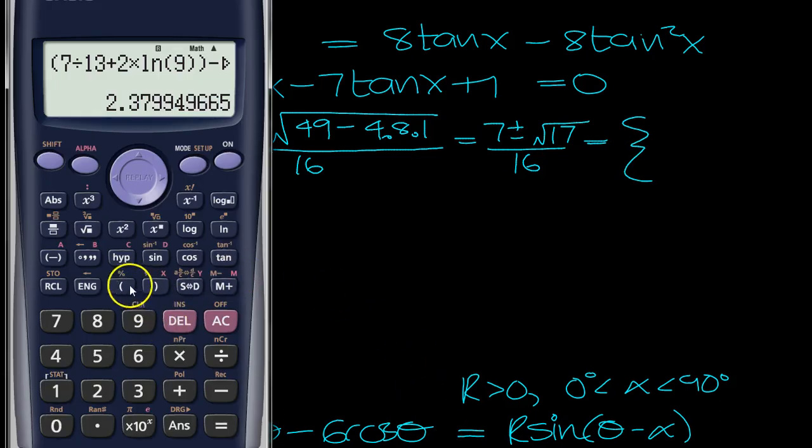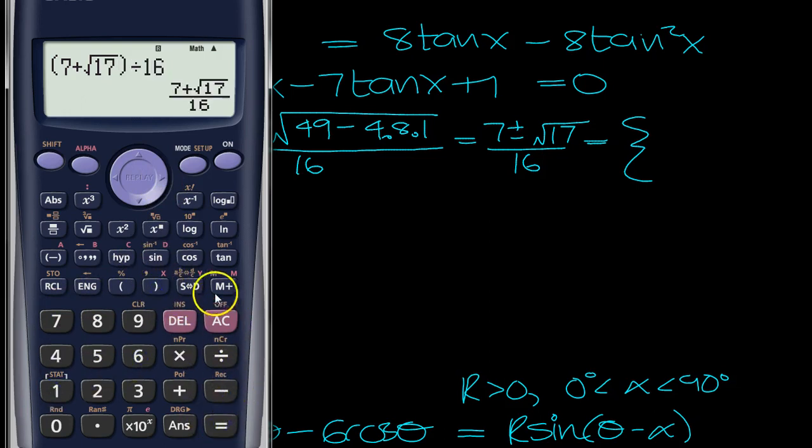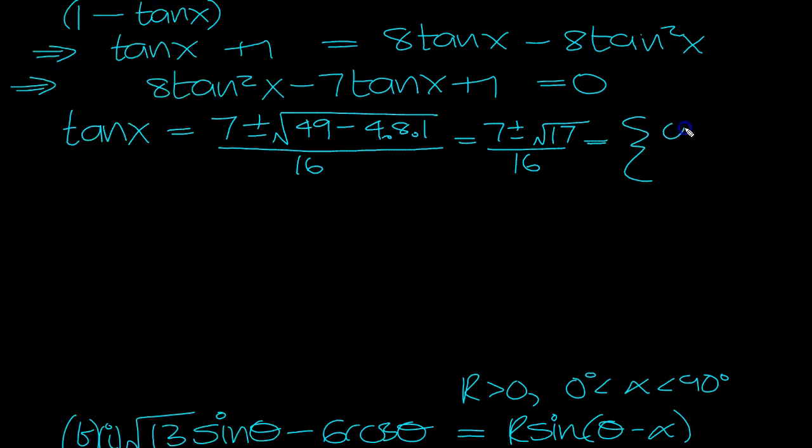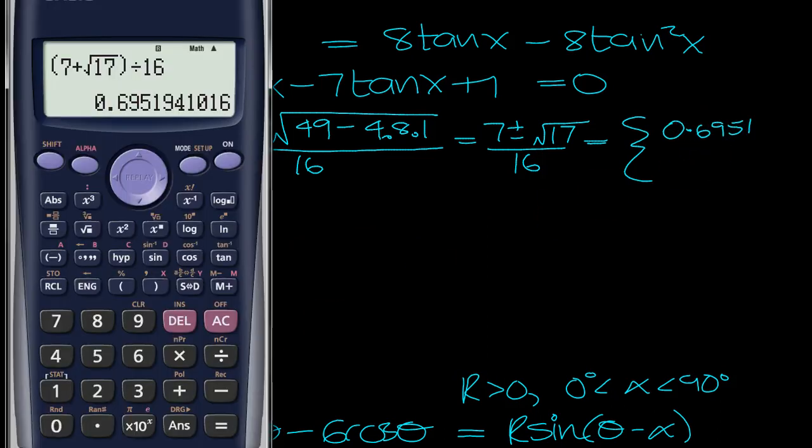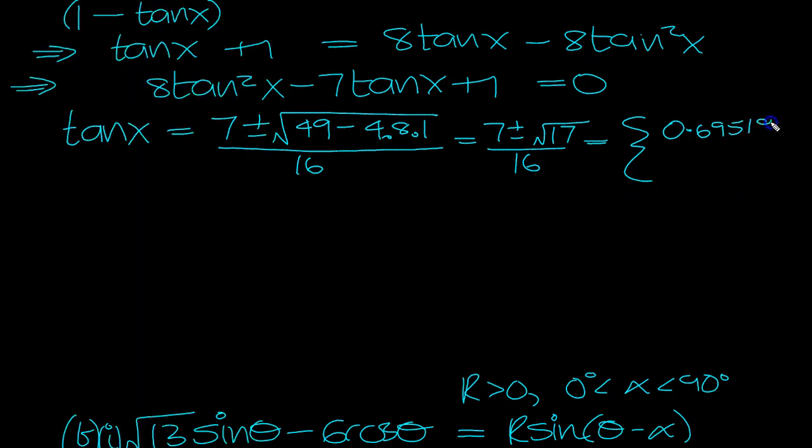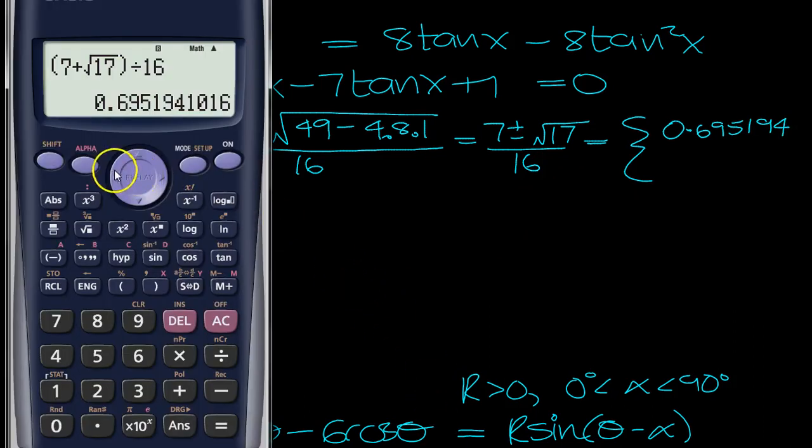So tan X equals 7 plus root 17 divided by 16, which is 0.6951. I'll get it nice and accurate. And the other one was a minus, 0.179805.